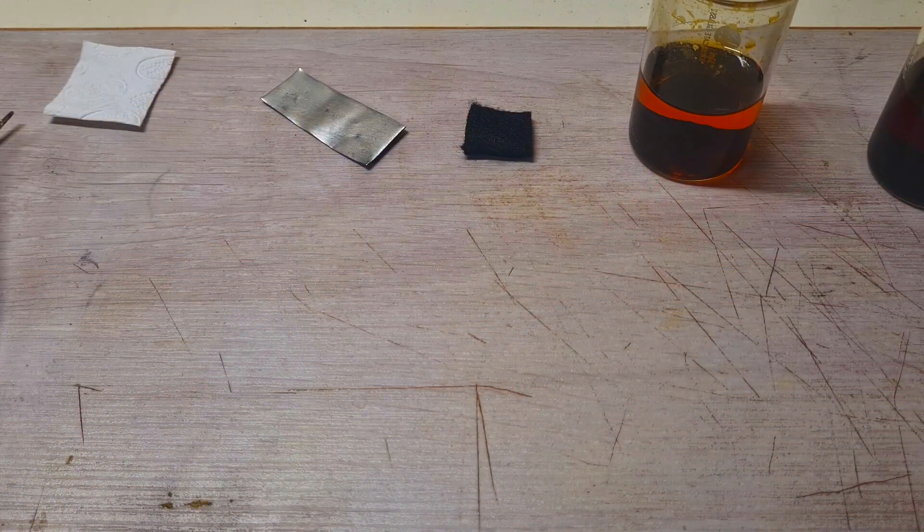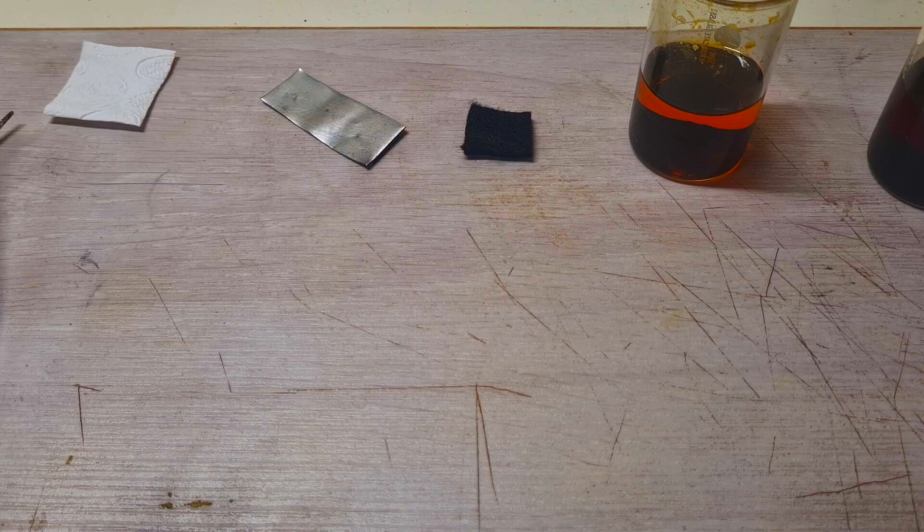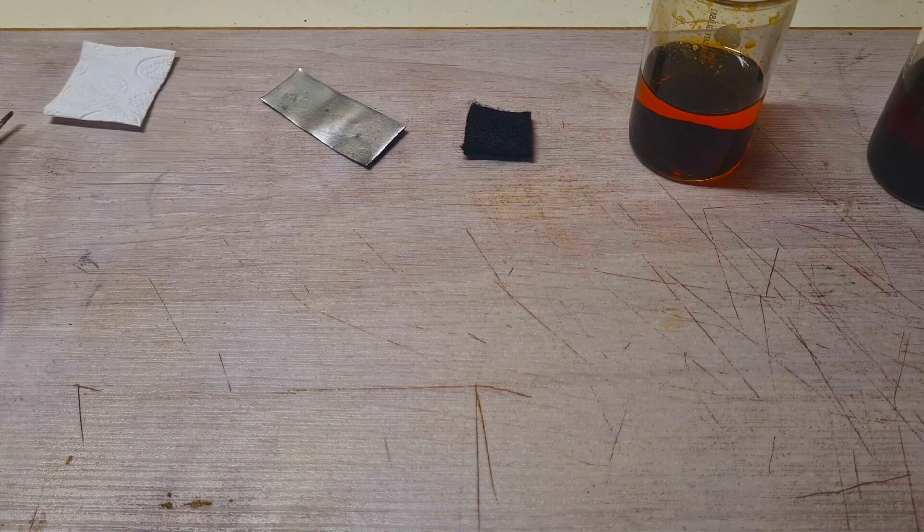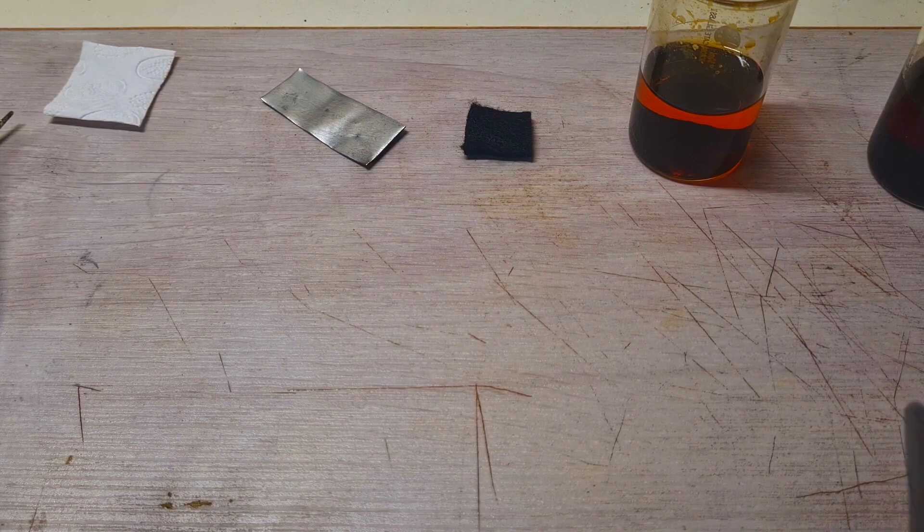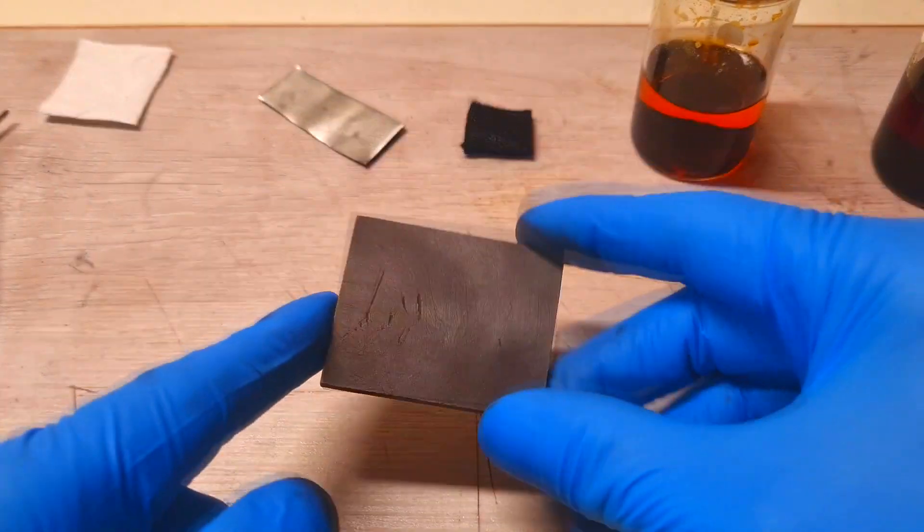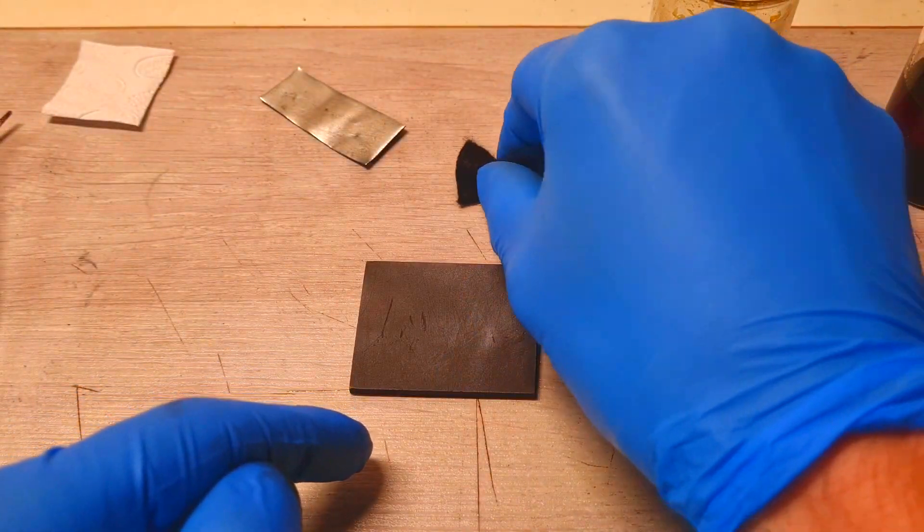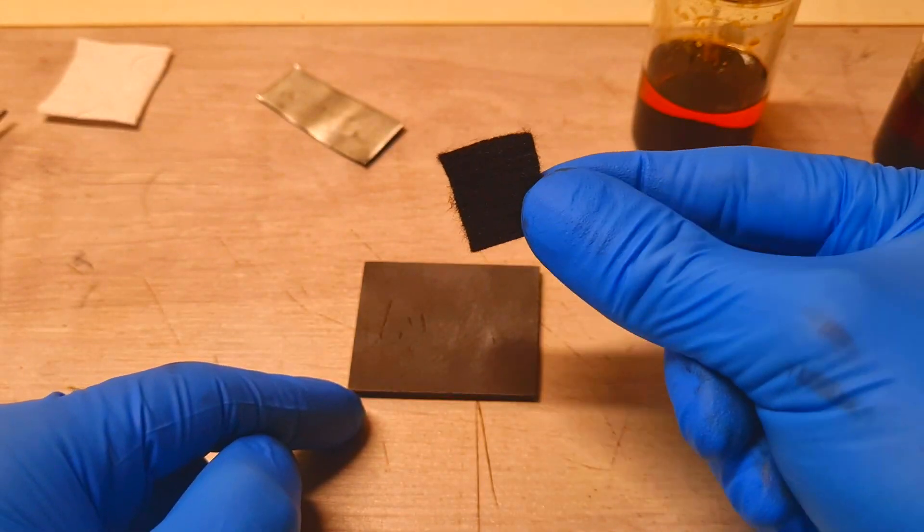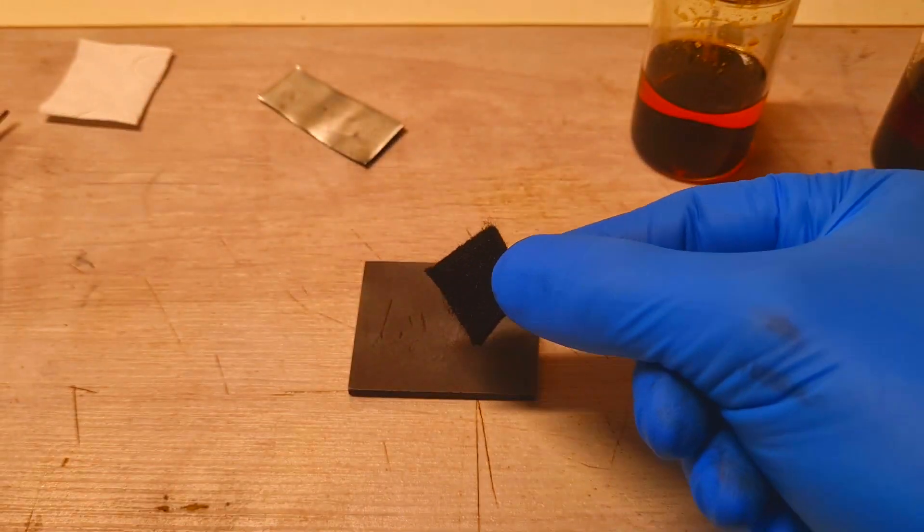And now instead of making some gravity cell design I will make some static cell design with the same system which I make with the gravity one. For my current collector for the positive side I will use this graphite. Here I have my carbon felt which is actually in size of two centimeters by two centimeters.